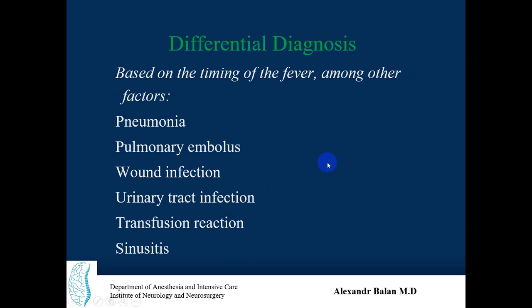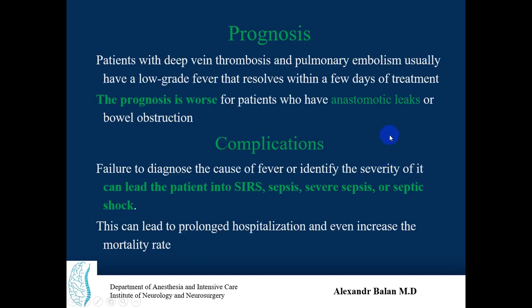Differential diagnosis includes pneumonia, pulmonary embolism, wound infection, urinary tract infection, transfusion reaction, or sinusitis. Patients with deep vein thrombosis and non-massive pulmonary embolism usually have a low-grade fever that resolves within a few days of treatment. The prognosis is worse for patients who have anastomotic leaks or bowel obstruction.